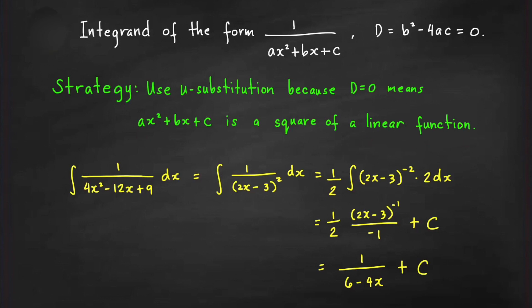For example, consider the integral of 1 over (4x² − 12x + 9) dx. When we factor the denominator, we get (2x − 3)². Since this is a square of a linear function, the discriminant equals 0, because there is only one zero of this quadratic expression: x = 3/2.